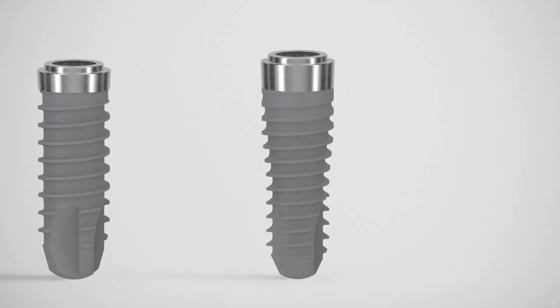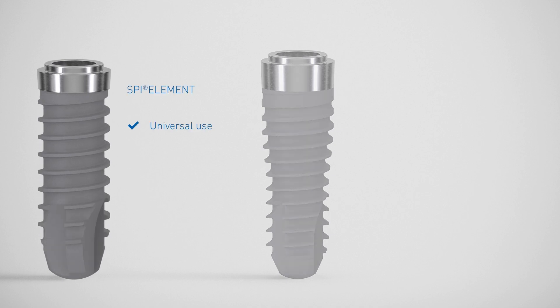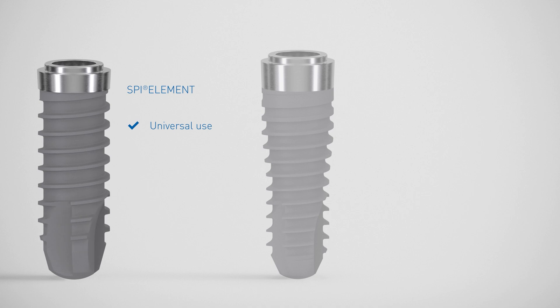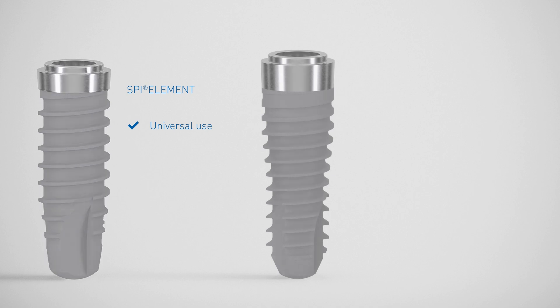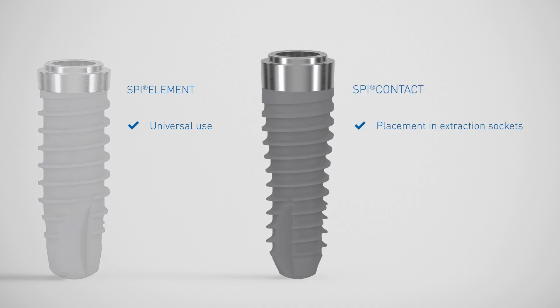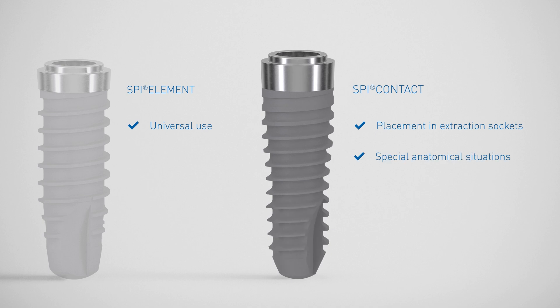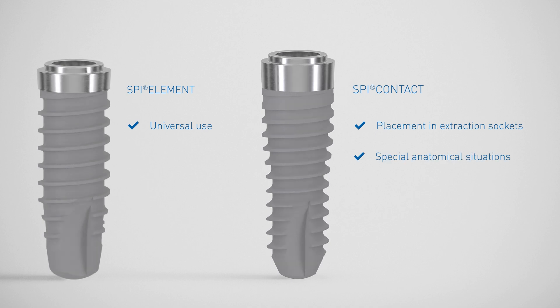Tomin Medical offers two different implant lines: parallel-walled SPI Element implants for universal use, and conical cylindrical SPI Contact implants for placement in extraction sockets and for special anatomical situations.